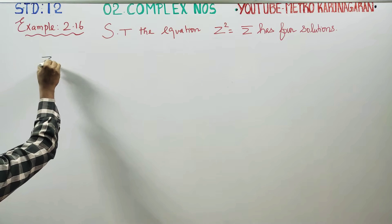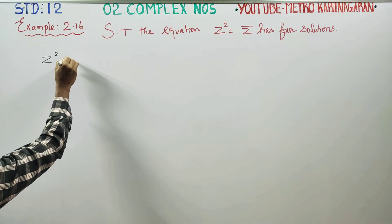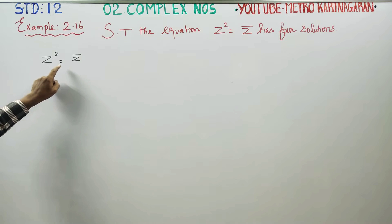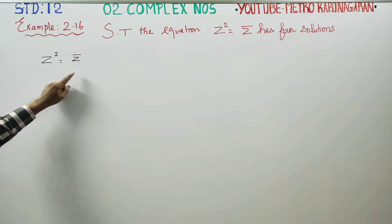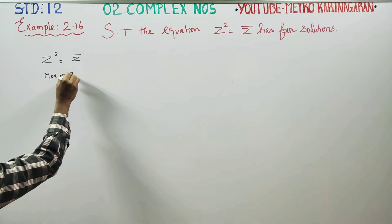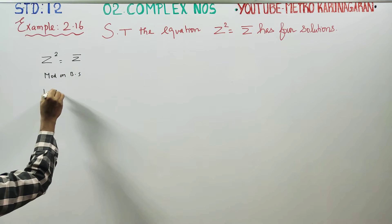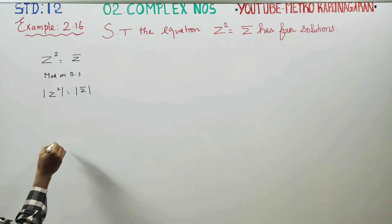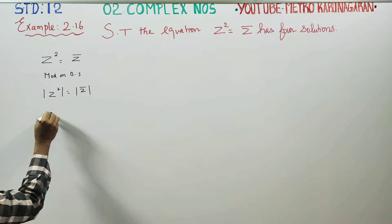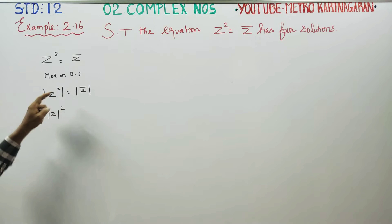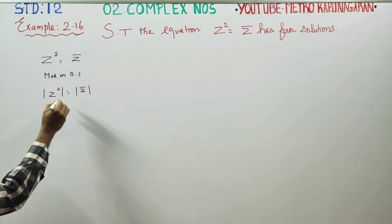First of all, Z² is equal to the modulus of Z-conjugate. We just take modulus on both sides: modulus of Z² is equal to modulus of Z-conjugate. Modulus of Z² can be written as modulus of Z whole square, by the property that |Zⁿ| = |Z|ⁿ.